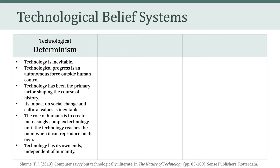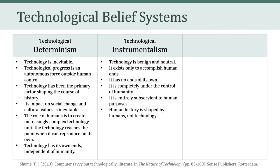Obviously, that's a very extreme belief system regarding technology. We could contrast that with technological instrumentalism. Technological instrumentalism argues that technology is actually benign and neutral. It exists only to accomplish human ends. It doesn't have any ends of its own. Therefore, it is completely under the control of humanity and entirely subservient to human purposes. The long and short of instrumentalism is that human history is shaped by humans and not by technology.